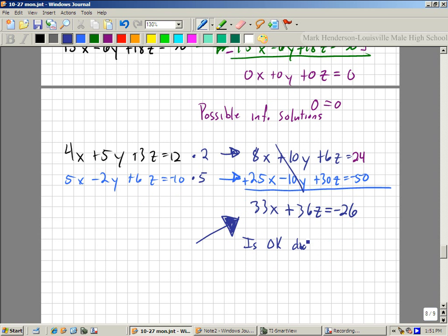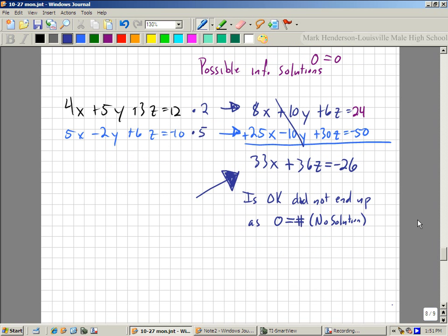Because it did not end up as 0 equals some number, i.e. the no solution part. So, let me say it another way. If there is a variable left without 0 in front of it, it's okay.